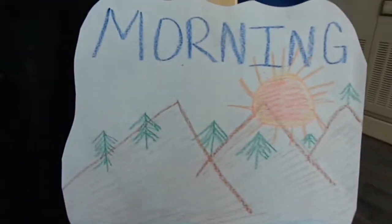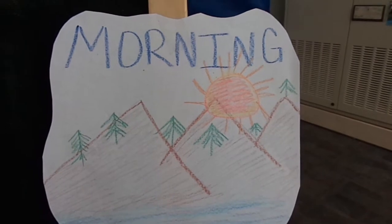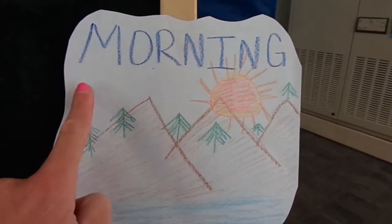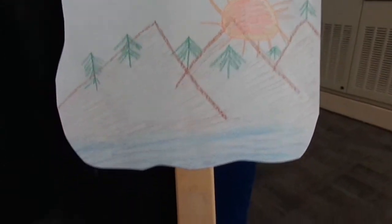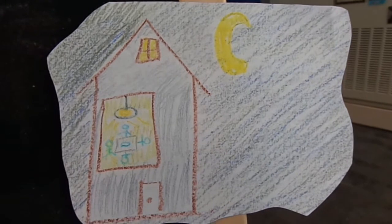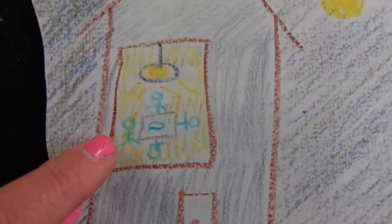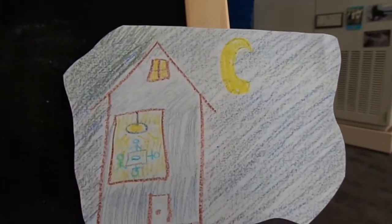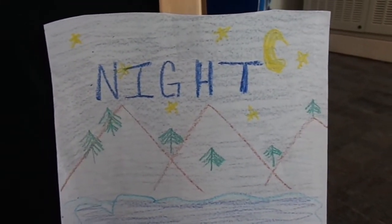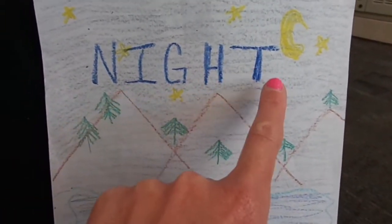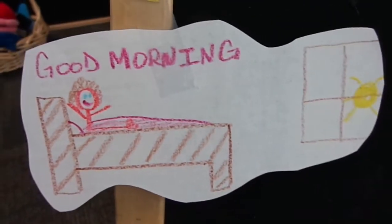I thought I could draw some pictures for you guys. Can you see what that says? That says 'morning' — there's the lake and the mountains, and look, the sun is coming up. Then here's a picture — that doesn't look like morning to me, that looks like nighttime. People are in the house having dinner, it's dark out, and the moon is out. That says 'night.'